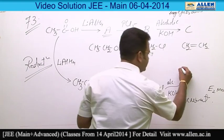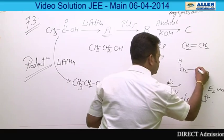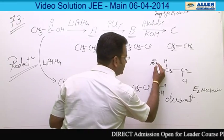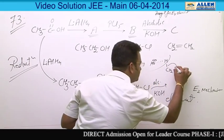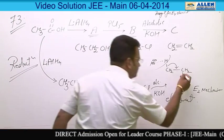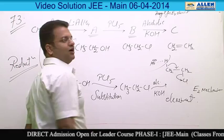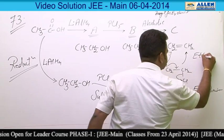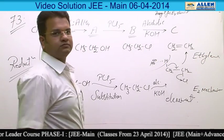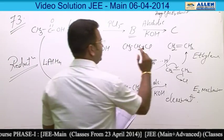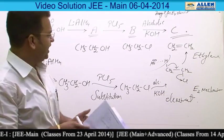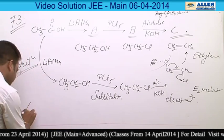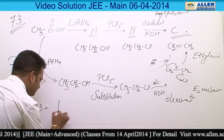The E2 mechanism: the base (OH minus) takes out a hydrogen, the bond shifts between the two carbons, the leaving group goes out, and this produces ethylene — CH2=CH2. Looking at the options, product C is CH2=CH2, so the most appropriate answer is option 1.